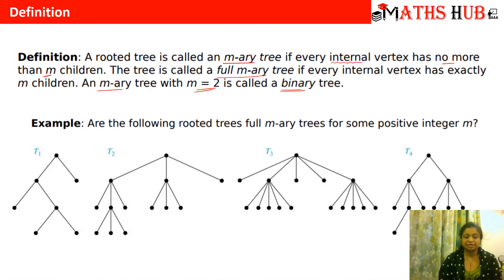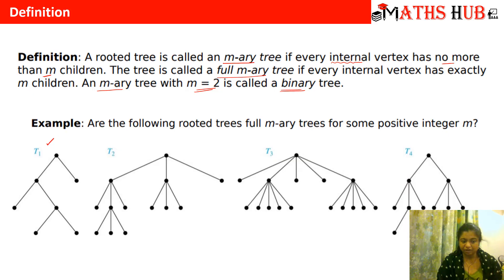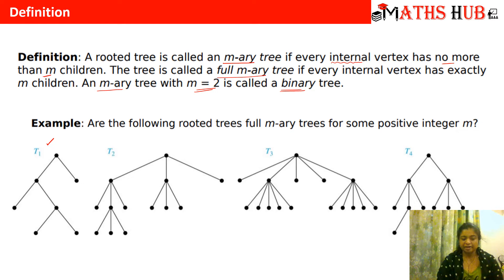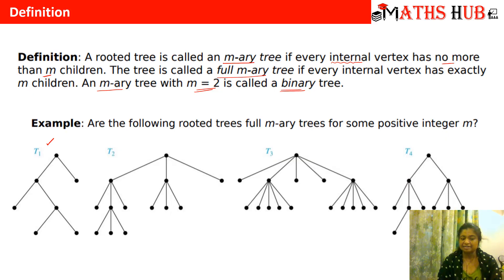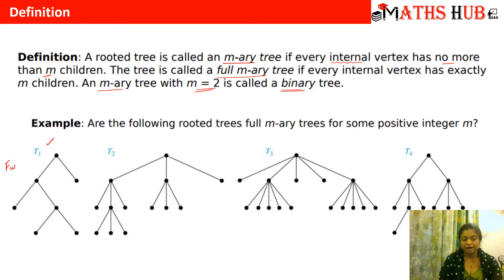Now let us see these examples and check whether these rooted trees are full m-ary trees for some positive integer M. Let's check T1 — looking at all the internal vertices. This vertex has 2 children, this vertex has exactly 2 children, this vertex has exactly 2 children. So we can say that it is a full binary tree, because every internal vertex has exactly 2 children — either 2 children or 0. So this is a full binary tree, meaning M here is equal to 2.